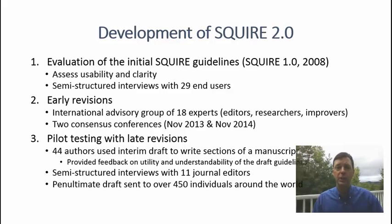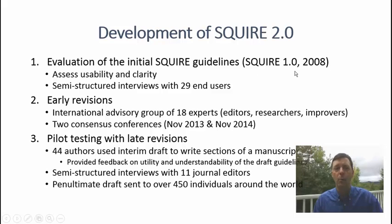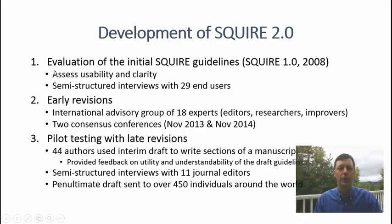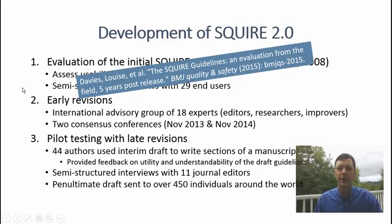These are the three stages of development of SQUIRE 2.0. We started with an evaluation of the initial SQUIRE guidelines, published in 2008, which we refer to as SQUIRE 1.0. Through semi-structured interviews with 29 end users, we assessed the usability and clarity of SQUIRE 1.0. Before we embarked on revising or rewriting the guidelines, we really wanted to know the experience of those who had used them. This work was led by Louise Davies and details can be found in BMJ Quality and Safety.